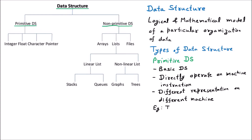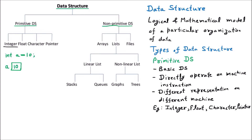The examples of primitive data structure are integer, float, character, and pointer — they are also mentioned in the diagram. Taking the integer as the first example: if we are going to declare an integer in memory, we usually say 'int a = 10'. The meaning is that in the memory there is a block which is reserved, the name of that block is 'a', and it can store the value which is 10.